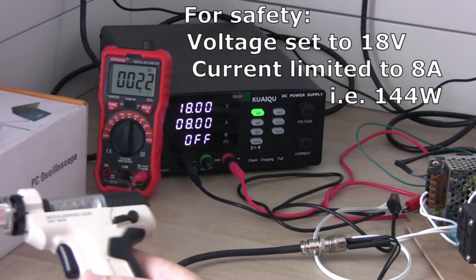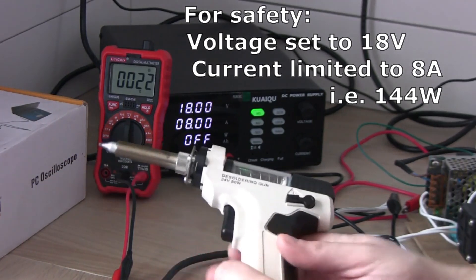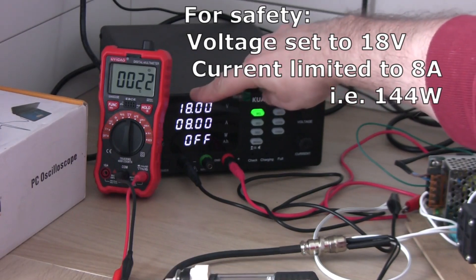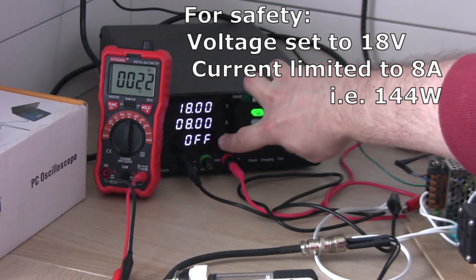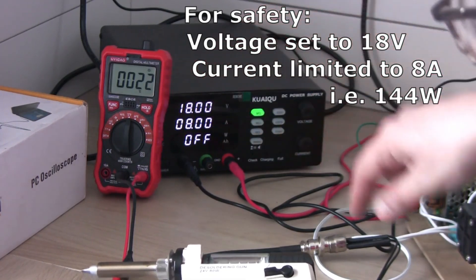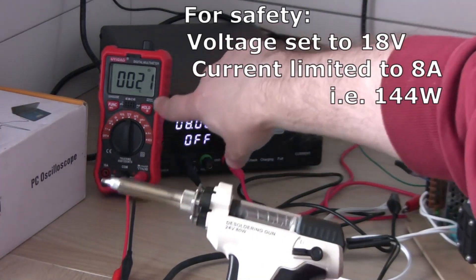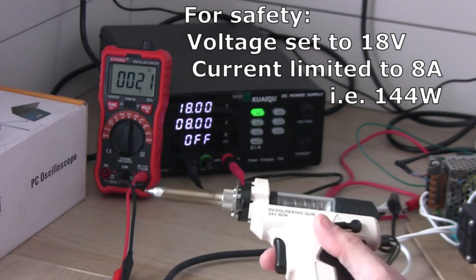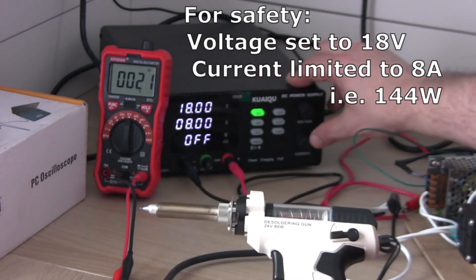So here is our test setup for the soldering gun. The lab power supply will provide 18 volts. There will be amps and wattage here on the display. There is a thermocouple already attached to the soldering gun element. It's showing room temperature at the moment, 21 degrees, and I'm going to switch it on and we're going to see what happens. Here we go.